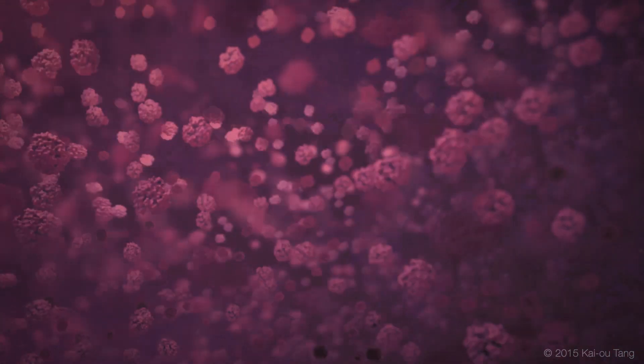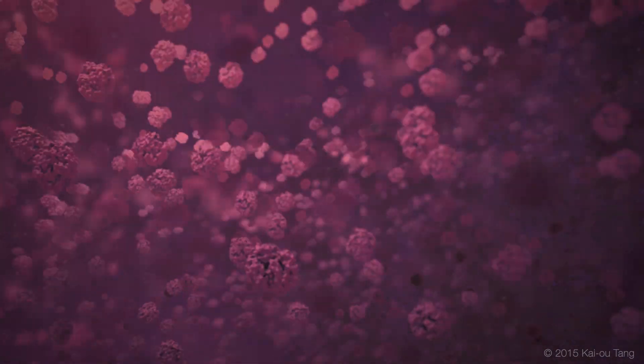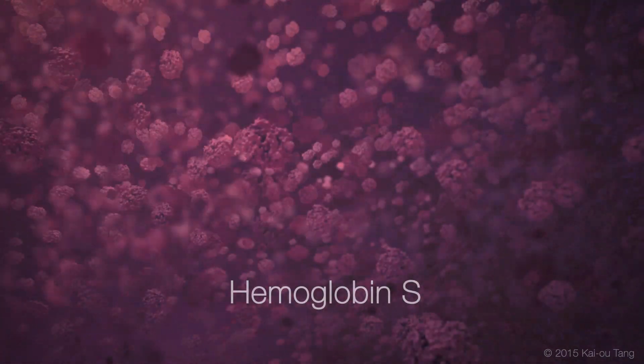Sickle Cell Anemia is a genetic mutation that results in the production of Sickle Cell Hemoglobin, also known as Hemoglobin S.